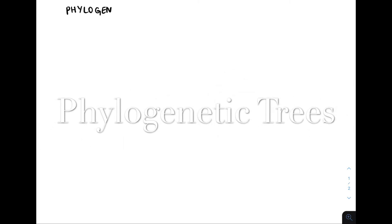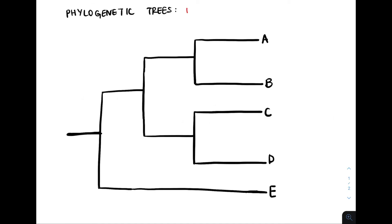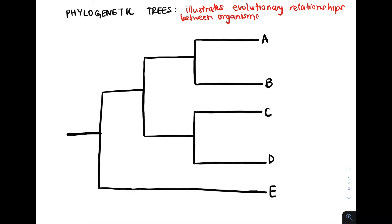Let's talk about phylogenetic trees. Phylogenetic trees illustrate evolutionary relationships between different organisms. But keep in mind that these are hypotheses — they are not facts. So we can do our best to illustrate relatedness among groups of species and different organisms, but we can't be 100% sure that our model is correct.